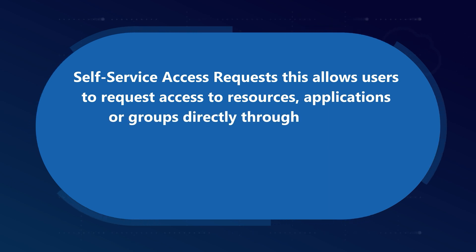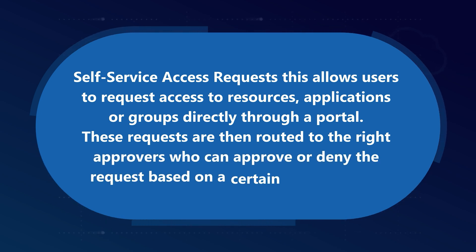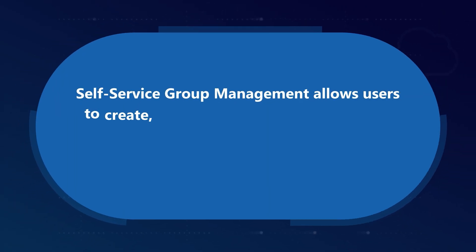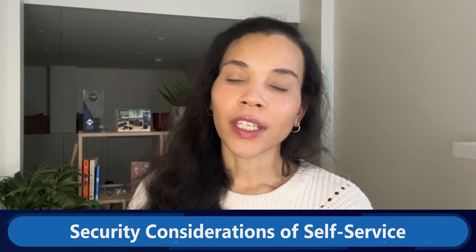Next is self-service access requests, which allows users to request access to resources, applications, or groups directly through a portal. These requests are routed to the appropriate approvers who can approve or deny them based on a set of policies, ensuring users have access to the tools they need while keeping strict control over sensitive resources. Self-service group management allows users to create, manage, and join groups without IT help — based on basic policies — which is useful for collaborating on cross-functional projects. It enables users to quickly form groups and share resources as needed.